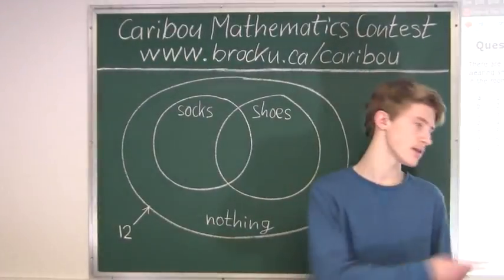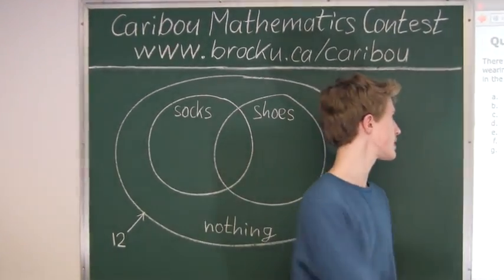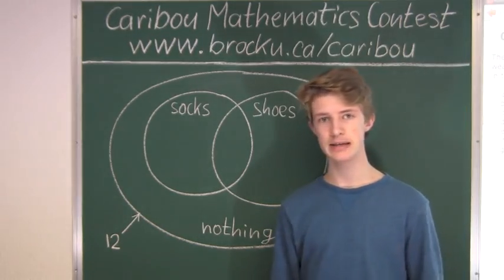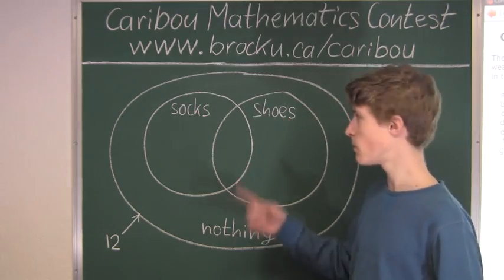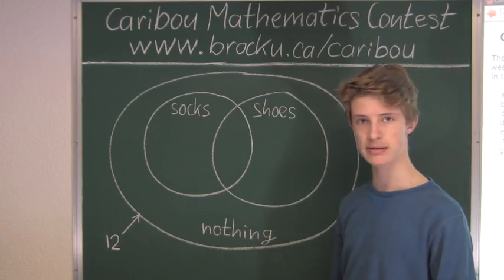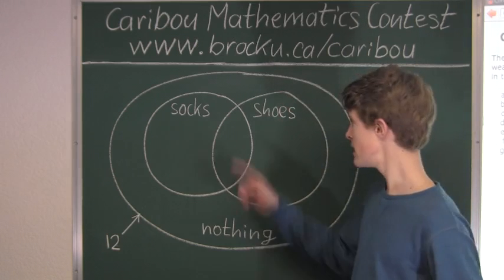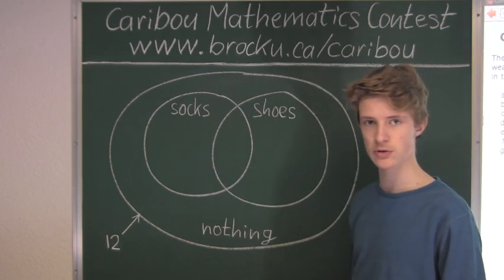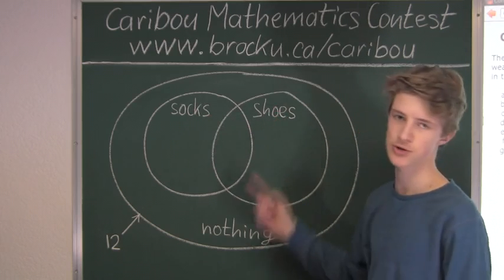For questions like this one that involve sets of things — for example, 6 people of something, 4 people of something — it would be easiest to draw a Venn diagram. In this diagram, one circle represents the people wearing socks, the other circle represents the people wearing shoes, and the section in the middle, which is the overlap of both circles, represents the people wearing both socks and shoes.